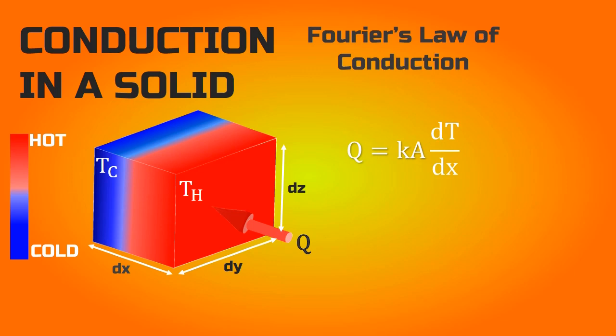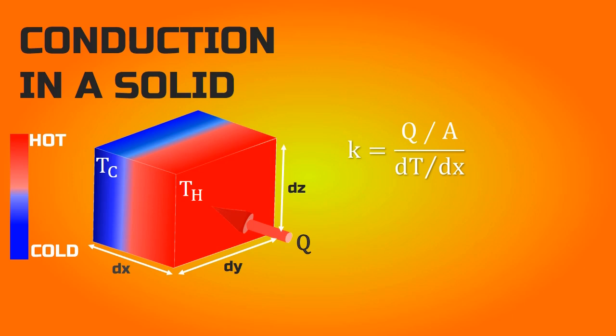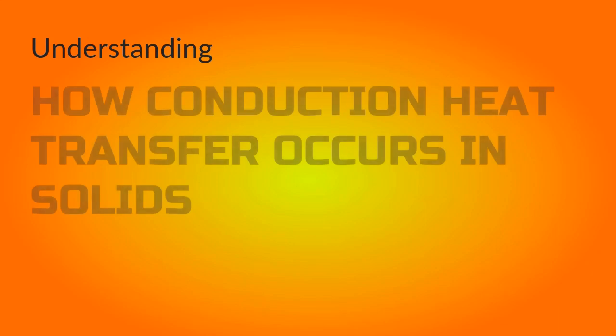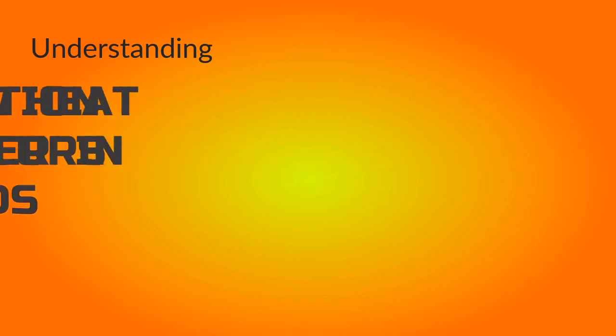Now if we rearrange this equation, we get the formula for thermal conductivity, where A is given by the product of dy and dz, and dT is the temperature difference between hot and cold sides. Thermal conductivity has a unit of watt per meter kelvin.